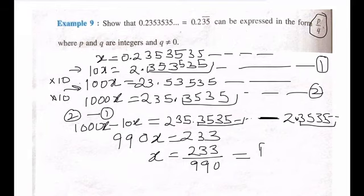As you can see, we have converted it into P by Q form. That's how you are going to do it. You keep on multiplying till we get the decimal part same. First we have multiplied with 10, then we have multiplied by again 10, then again 10.